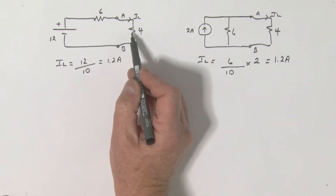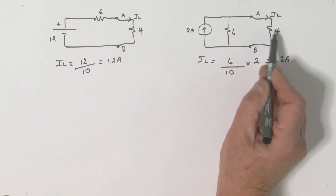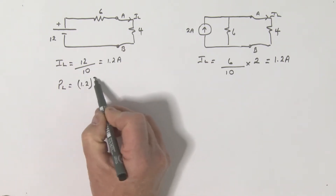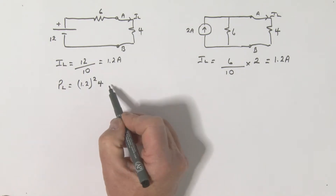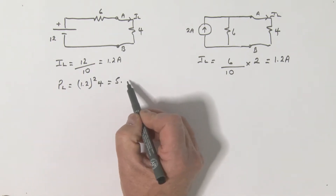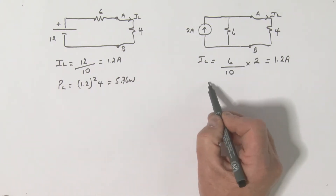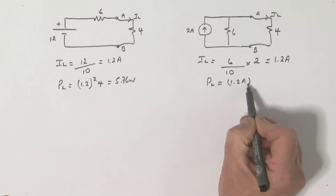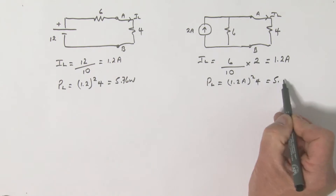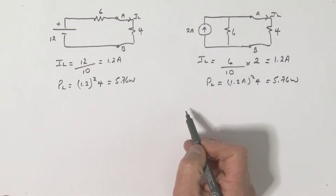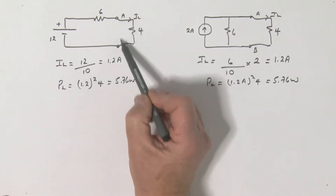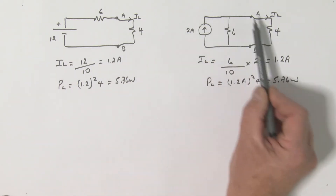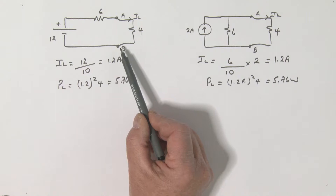We can also look at the power dissipated in the load resistance. The power in the load is 1.2 amps squared multiplied by 4 ohms, which is 5.76 watts. Of course in the Norton circuit, the power in the load is also 1.2 squared multiplied by 4, which is 5.76 watts. So as far as these terminals are concerned, this circuit behaves exactly the same as this circuit.